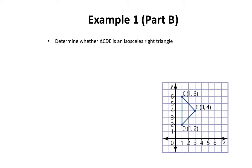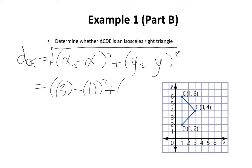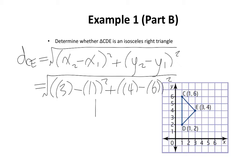The first thing I want to do is figure out the length of line CE. We're going to start with our equation, using a subscript of CE to indicate which line we're talking about. We substitute in our known values: instead of x2 I put 3, instead of x1 I put 1, instead of y2 I put 4, and instead of y1 I put 6. You can do the calculations on your own — you should get a value of around 2.83 units.